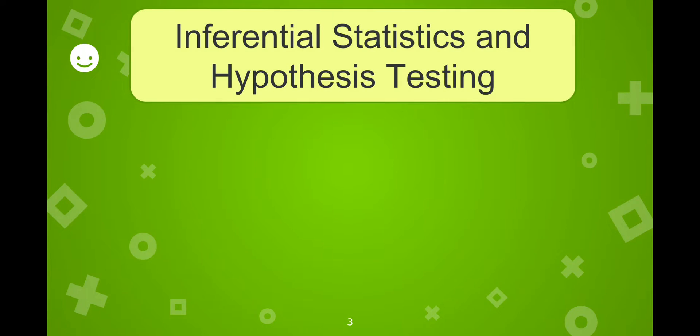In our previous lesson, we learned that the sample mean and proportion are point estimates in determining the confidence interval in the Z and T distribution, which can be used in solving problems related to real-life situations.